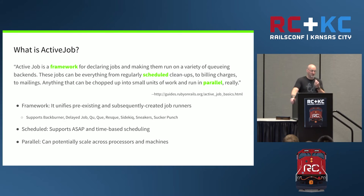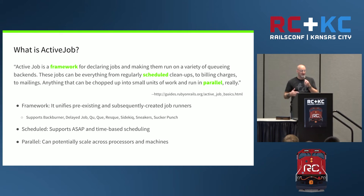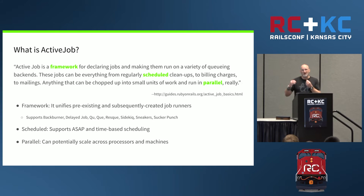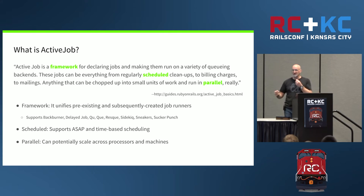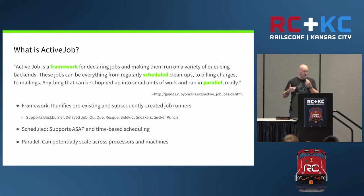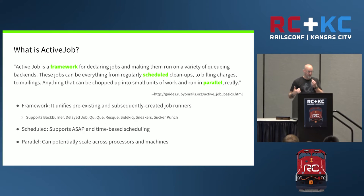Active Job, according to the Rails guides, is a framework for declaring jobs and making them run on a variety of queuing backends. Jobs can be everything from regularly scheduled cleanups to billing charges, mailings — anything that can be chopped up into small units of work and run in parallel. Asynchronous job processing pre-existed Active Job. There were things like Backburner, Delayed Job, Queue, Resque, Sidekiq, Sneakers, Sucker Punch — many of these existed before Active Job, and Active Job came along as a way of unifying those.